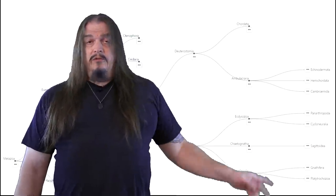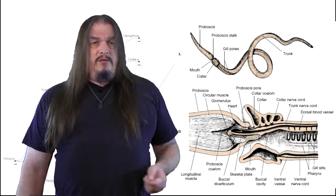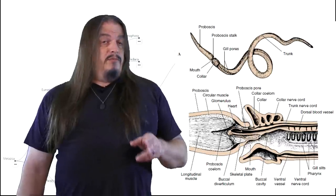On that note, staying within deuterostomes from here on, we look at another sister clade, hemichordata. These odd looking worms show the first emergence of a few important traits.